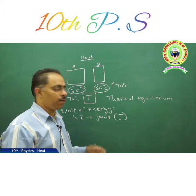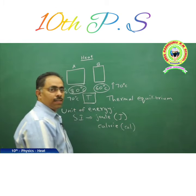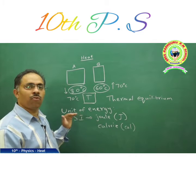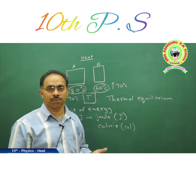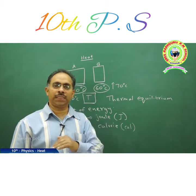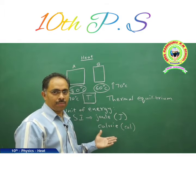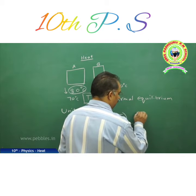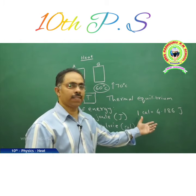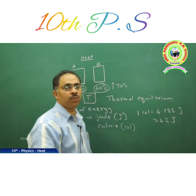Another unit of heat is the calorie, symbol Cal. This is the general unit of heat we measure. When there are different units for the same quantity, it is useful to know the relation between them. One calorie is equal to 4.186 joules, which we generally approximate as 1 calorie = 4.2 joules.